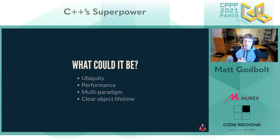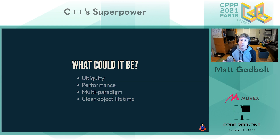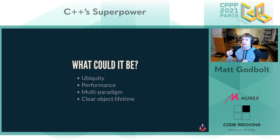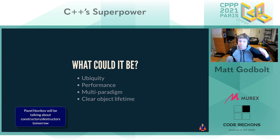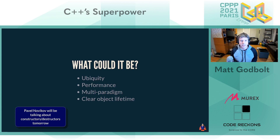The one I would have said before I thought up this talk would be the clear object lifetime of C++. One of the killer features is that we know when our objects are going to go out of scope, and we can make assumptions about when destructors are going to run — which allows us to manage memory efficiently, manage file handles, database connections, all those things. What I'm talking about of course is RAII. Pavel Novikov will be talking about constructors and destructors in his talk tomorrow.